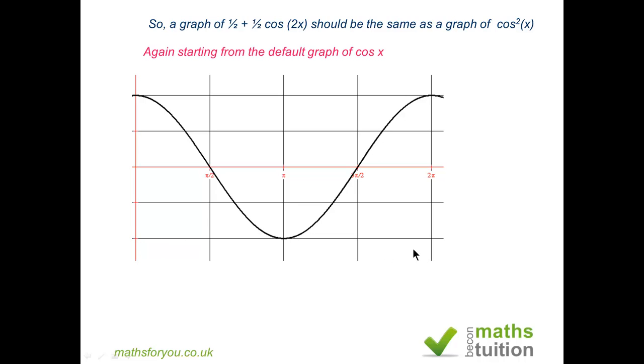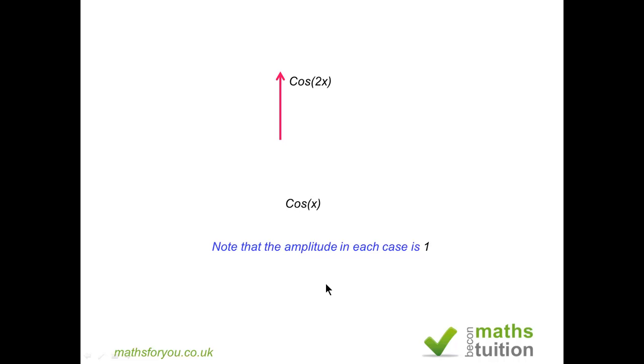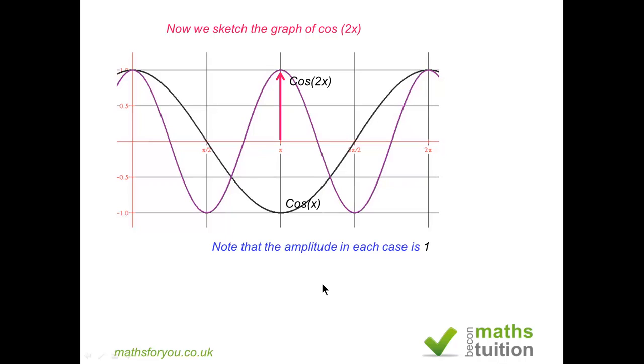We shall sketch the graph of cos(2x) and you find that cos(1x) will go from 0 to 2π in one cycle, whereas for cos(2x) you go from 0 to π and then from π to 2π, so you do that in two cycles. So the period is π.